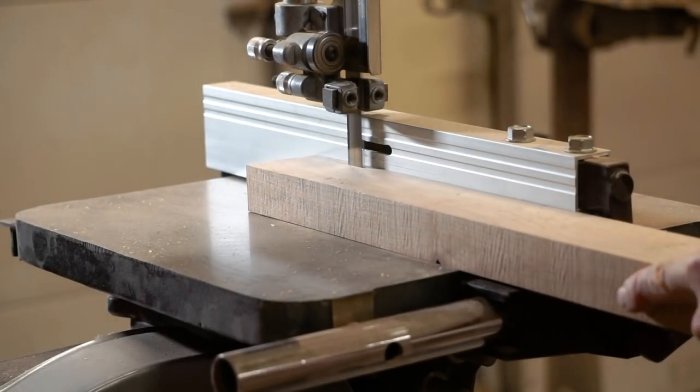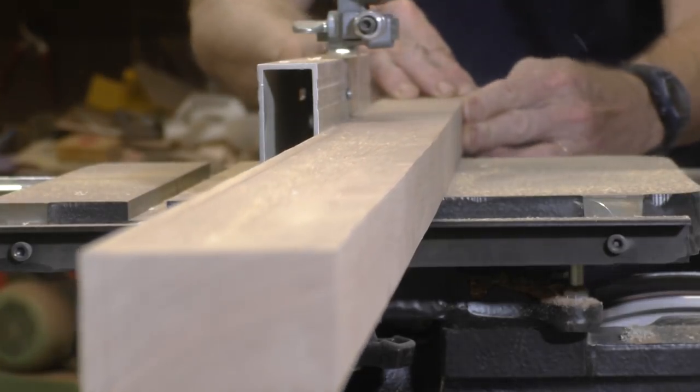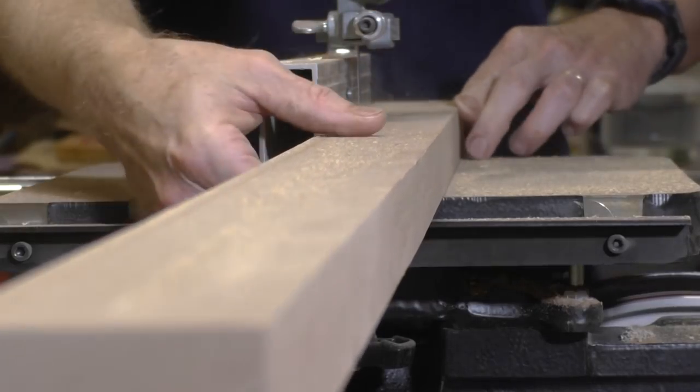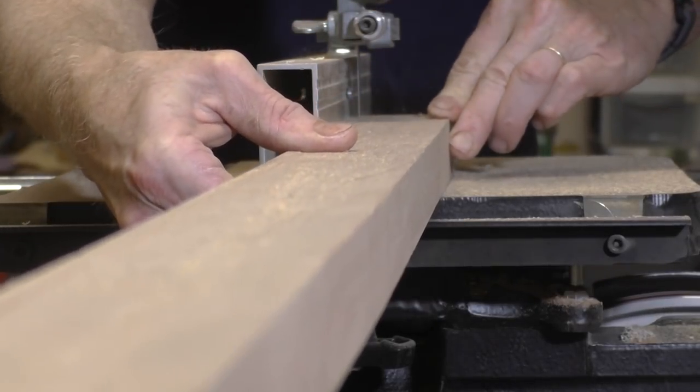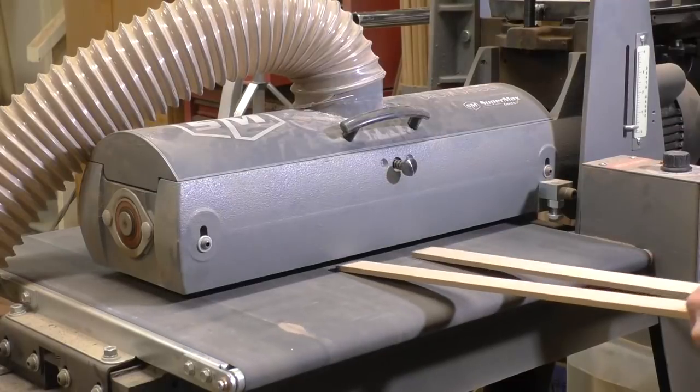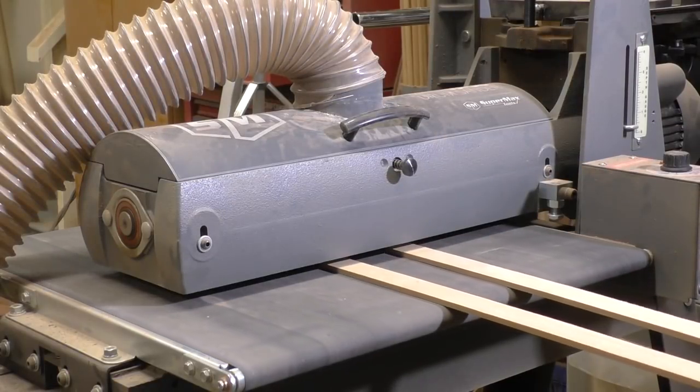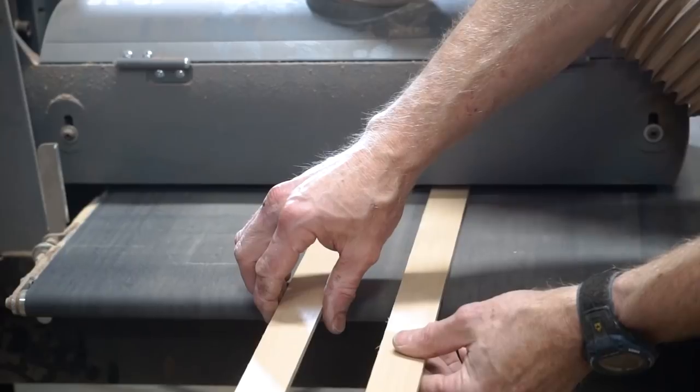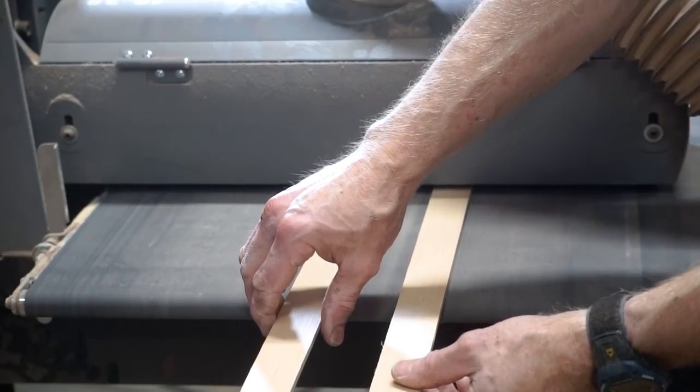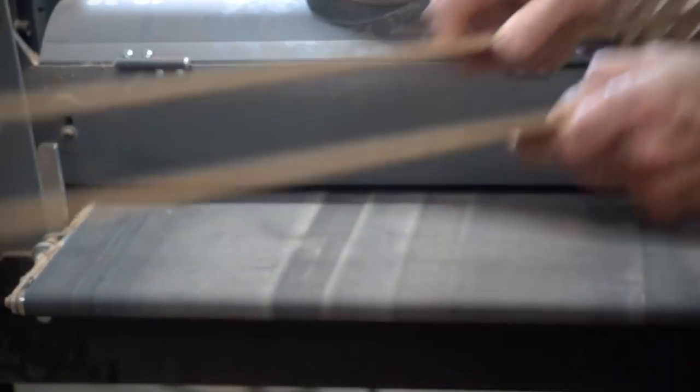Now I need to cut some cherry into a thin strip that I can insert into the slots that I just cut because I didn't have enough left over from the piece that I cut on the table saw. So I'm cutting that on the bandsaw to be just a little bit more than a quarter of an inch so that after sanding it down to the final size, it will fit perfectly into the slot.